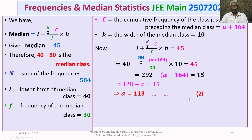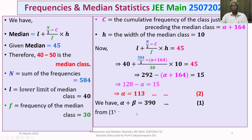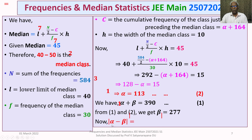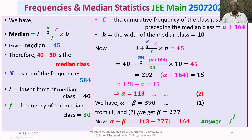We already have equation 1: alpha plus beta equals 390. With alpha equal to 113 from equation 2, we get beta equals 277. Therefore, |alpha minus beta| equals |113 minus 277| equals 164. That is our answer.